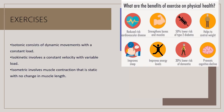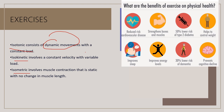Exercises can be either isotonic, isokinetic, or isometric. Isotonic is dynamic movement with a constant load. Isokinetic is constant velocity with a variable load. Isometric is muscle contraction that is static without any muscle length change.